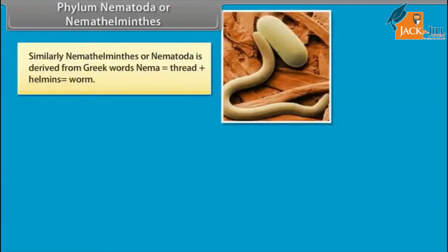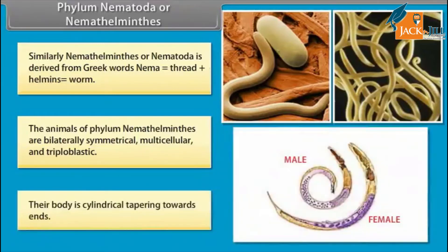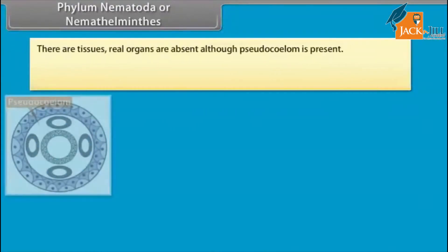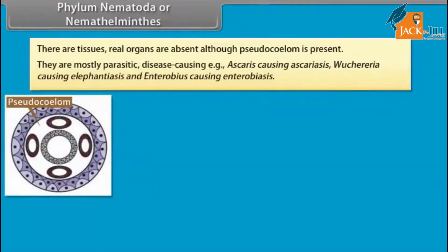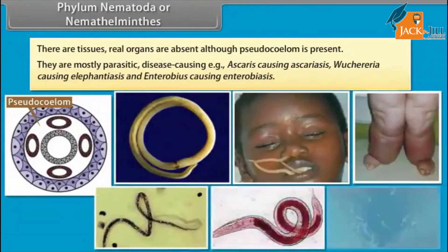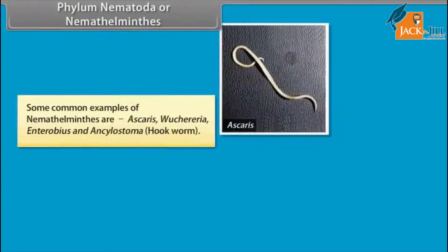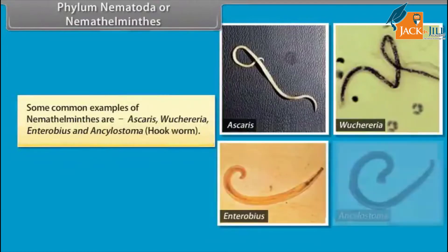Phylum Nematoda or Nemathelminthes. Nemathelminthes or Nematoda is derived from Greek words nema, which means thread, plus helminthes, worm. The animals are bilaterally symmetrical, multicellular, and triploblastic. Their body is cylindrical tapering towards ends. There are tissues but real organs are absent, although pseudocoelom is present. They are mostly parasitic and disease-causing: Ascaris causing ascariasis, Wuchereria causing elephantiasis, and Enterobius causing enterobiasis. Common examples include Ascaris, Wuchereria, Enterobius, and Ancylostoma, the hookworm.